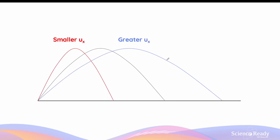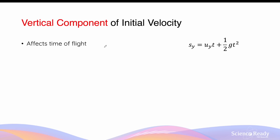Notice that in both cases, whether the range has increased or decreased, the maximum height reached remains the same as before, as outlined by the black line. Not only do the maximum heights remain constant, the time for each motion — shown in blue and red — should also be the same as the original in black. Only the range changes when the horizontal component of velocity is changing, assuming the vertical component remains the same.